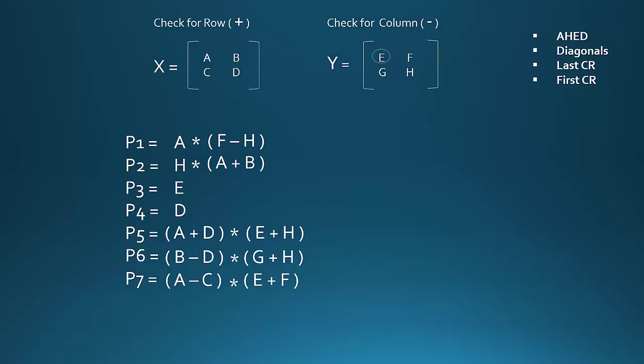Now consider P3. In P3 we have E. The opposite corresponding element of E is A. And since A is in X we will check for rows, and the opposite row is CD. And we will use positive sign here as we are considering a row, so we will write C plus D.